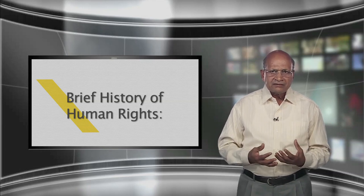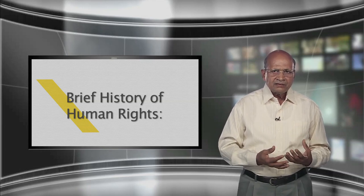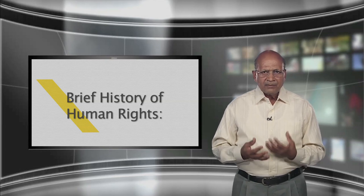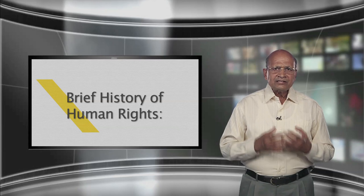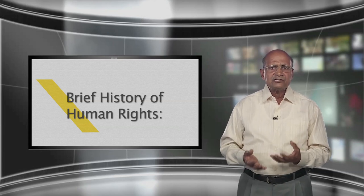The Magna Carta enumerates what later came to be thought of as human rights. Among them was the right of the church to be free from governmental interference, the rights of all free citizens to own and inherit property and to be protected from excessive taxes. It established the right of widows who owned property to choose not to remarry, and established principles of due process and equality before the law. The Magna Carta was a crucial turning point in the struggle to establish freedom.